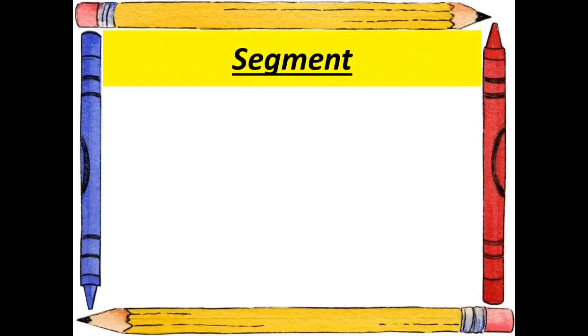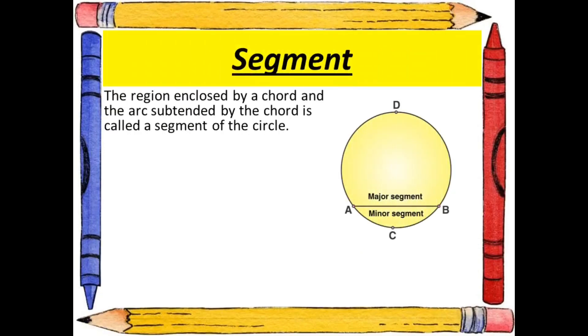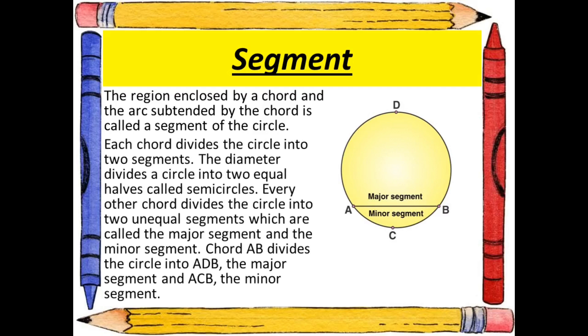The next topic is segment. The region enclosed by a chord and the arc subtended by the chord is called a segment of the circle. Each chord divides the circle into two parts. Every other chord divides the circle into two unequal segments: the major segment and the minor segment. Chord AB divides the circle into ADB, the major segment, and ACB, the minor segment.